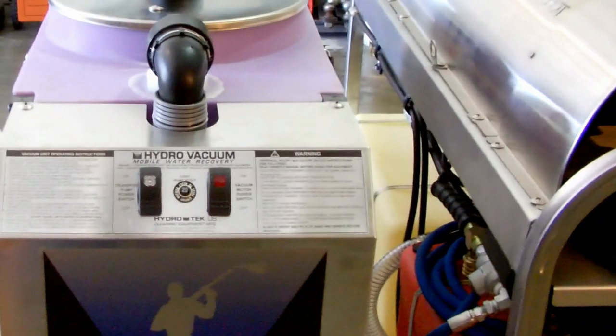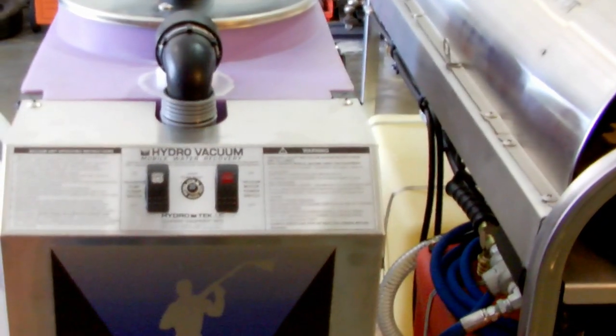This is the vacuum inlet to the recovery tank. It has two filtration systems additional on here which are two bag filters, one inner and one outer. Inside the tank are two float switches that kick on and off the 12 volt transfer pump. And also, we'll shut off the vacuum motor if the tank is filling up or too full in case somebody forgot to turn the transfer pump on to process the water.